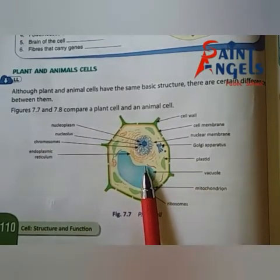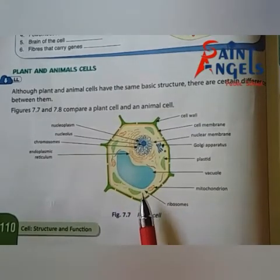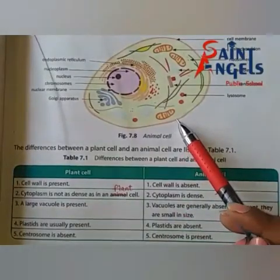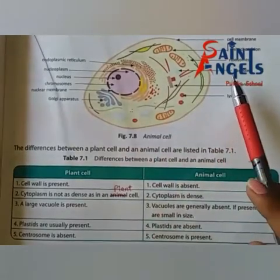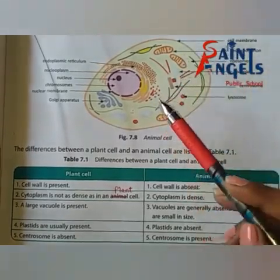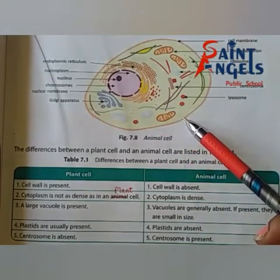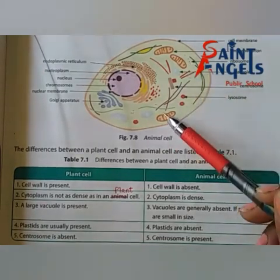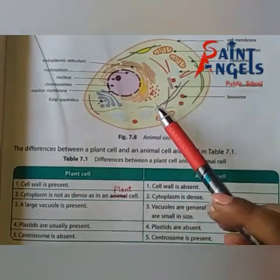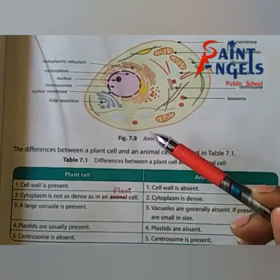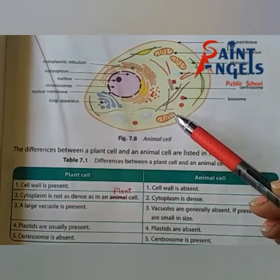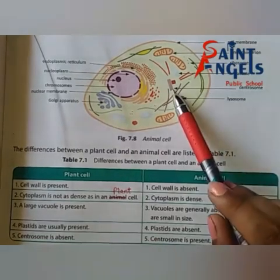Now we will discuss about animal cell. In animal cells, there is no cell wall — cell wall is present only in plant cells. In animal cells, cytoplasm is more abundantly present. In plant cells there was a large vacuole, but in animal cells the vacuoles are small — you can see multiple small vacuoles here. Plastids are present in plant cells but absent in animal cells. Centrosome is absent in plant cells, and you can see here that centrosomes are present in animal cells.